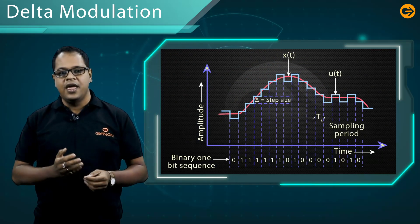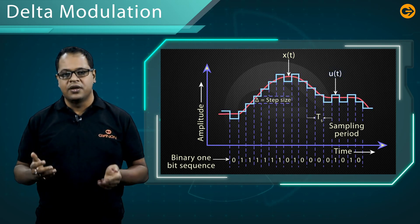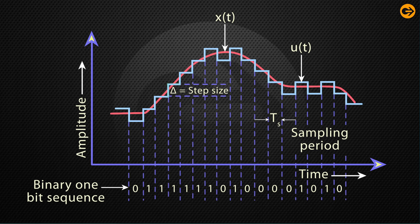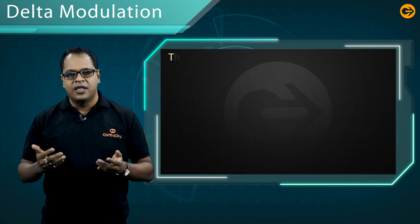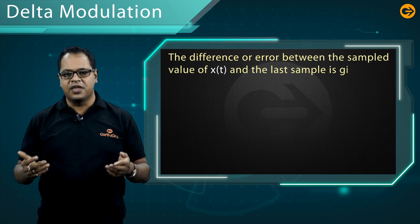In delta modulation, an input signal x(t) is delta modulated to another signal u(t) by two levels: either plus delta or minus delta. x(t) and u(t) are compared — if the difference is positive, the signal is increased by one step delta; if the difference is negative, the signal is reduced by one step minus delta.